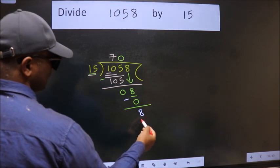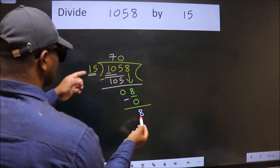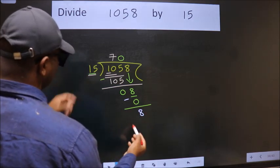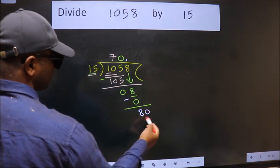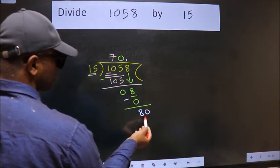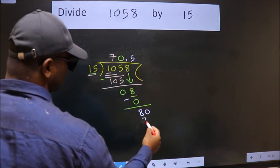Over here, we did not bring any number down and 8 is smaller than 15. So now we can put dot and take 0. So, 80. A number close to 80 in 15 table is 15 times 5, 75.